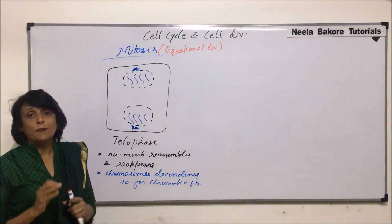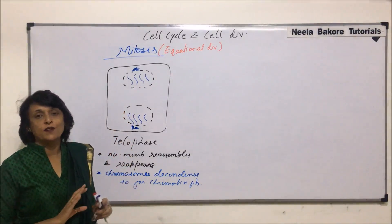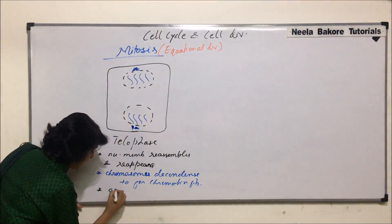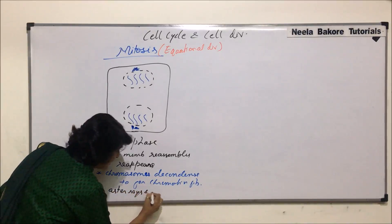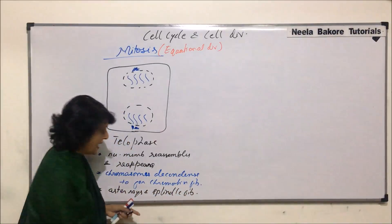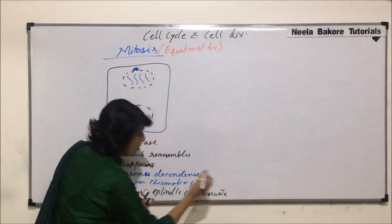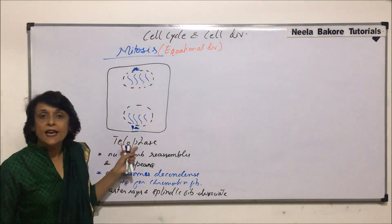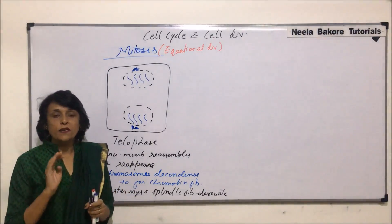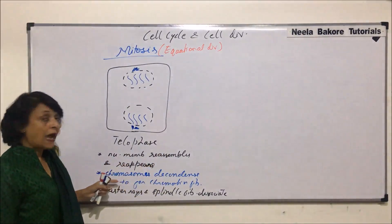Chromosomes decondense to form chromatin fibers — it is the reverse of what happened in prophase. One more change: in prophase, aster rays and spindle fibers formed; here in telophase, aster rays and spindle fibers again dissociate and disappear, which is again the reverse of prophase.